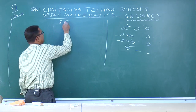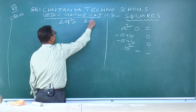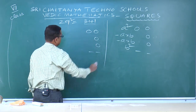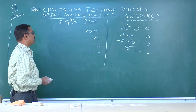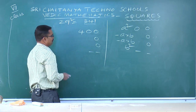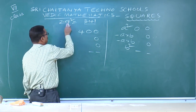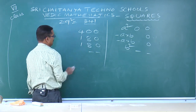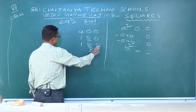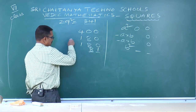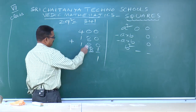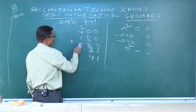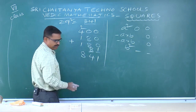Next: 29². Here a=2, b=9. Use formula: a²=2²=4, a×b=2×9=18, a×b=18 again, b²=9²=81. Add: 1; 8+8=16, carry 6; 6+8=14, carry; 4+8=8; answer is 841.